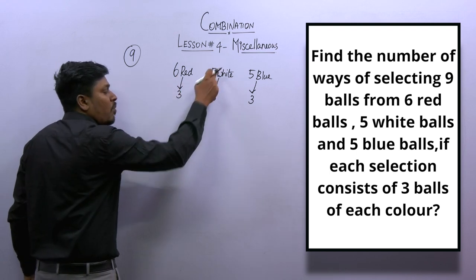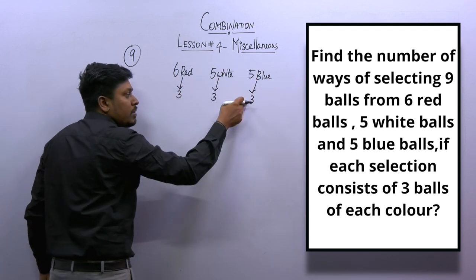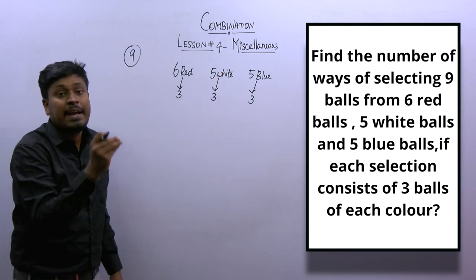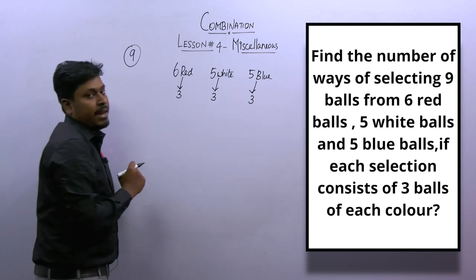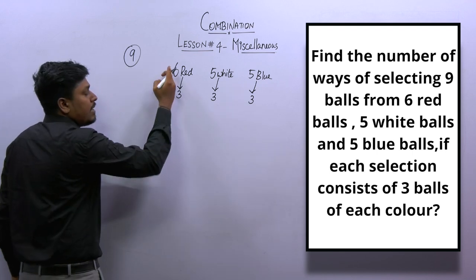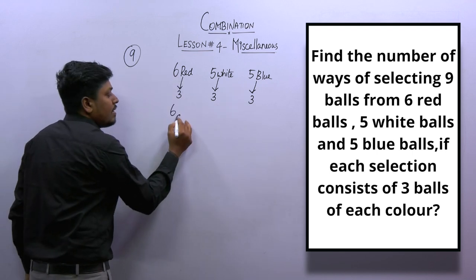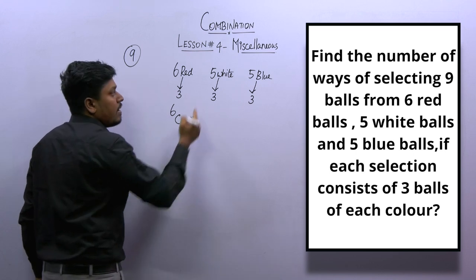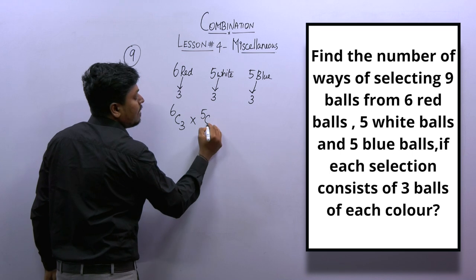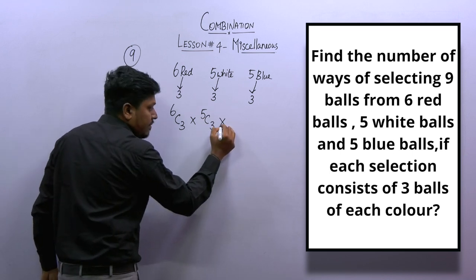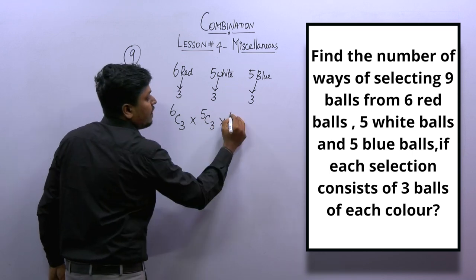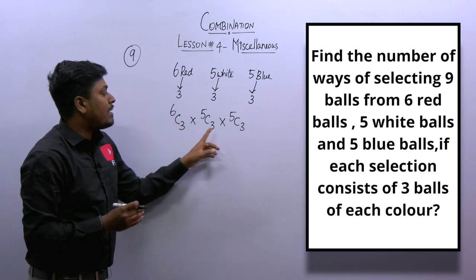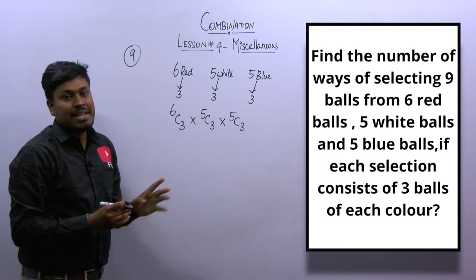From the 6 red balls, select 3 — that's 6C3. The word 'and' connects each color selection, meaning multiplication. From 5 white balls, select 3 — that's 5C3. From 5 blue balls, select 3 — that's another 5C3. So the expression is 6C3 × 5C3 × 5C3. Totally we pick 9 balls, 3 from each color.